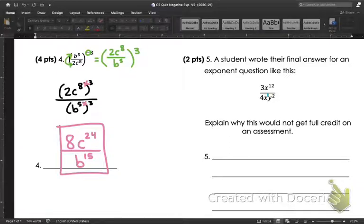I have x to the 12 in the numerator, but I also have an x in the denominator. So they needed to complete this problem by doing the division rule. We can say that why it wouldn't get full credit. We can say something as simple as x is written more than once.